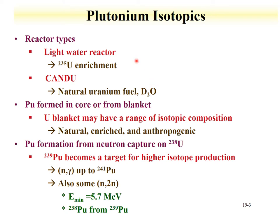Plutonium can be formed in the core or in a blanket of a reactor. A blanket is generally uranium-238 material that sits outside the reactor area to capture neutrons and form plutonium, which can then be separated and used as fuel. So there are fundamentally two areas where plutonium can be made: within the core and in the blanket. Plutonium-239 is formed from neutron capture on uranium-238, going to uranium-239, neptunium-239, then plutonium-239.